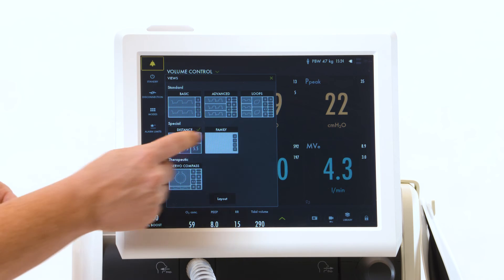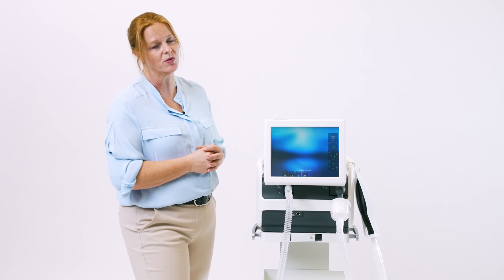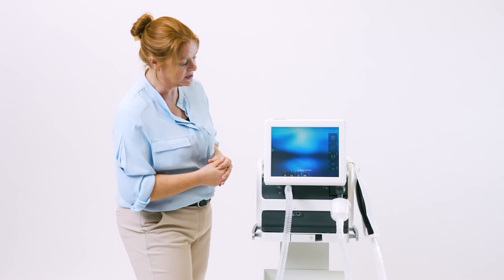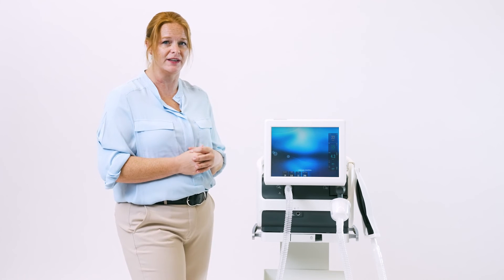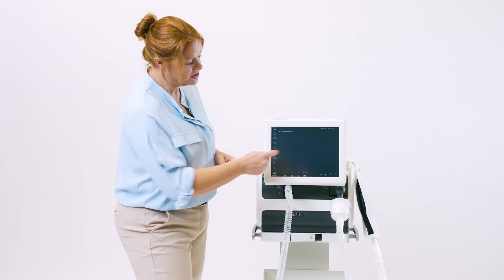When you look at your family screen, it's a more simplified view. You still have your settings and measured values. The bubbles indicate that ventilation is occurring. In order to get out of the screen, just touch.